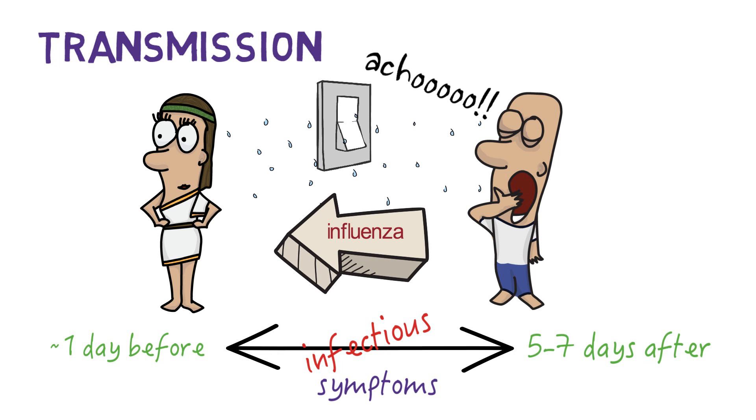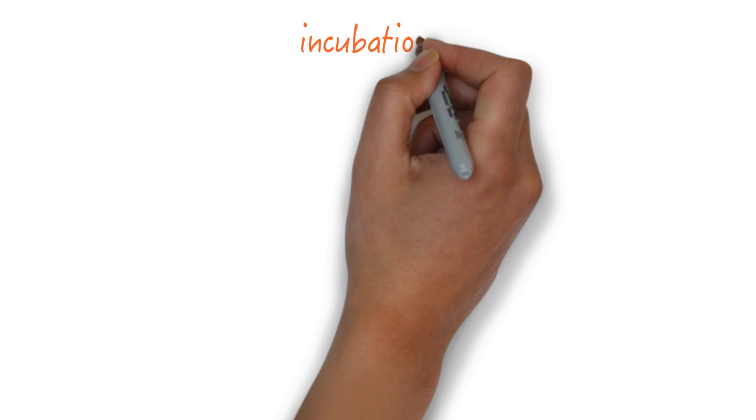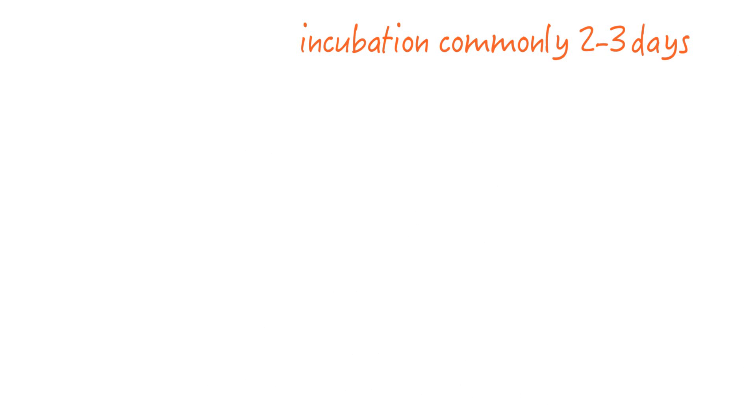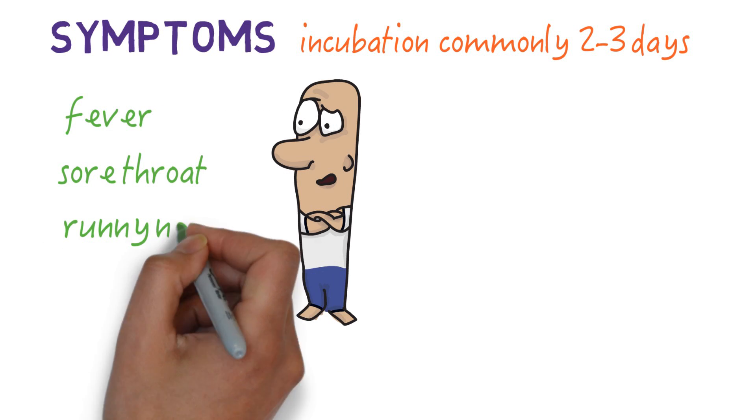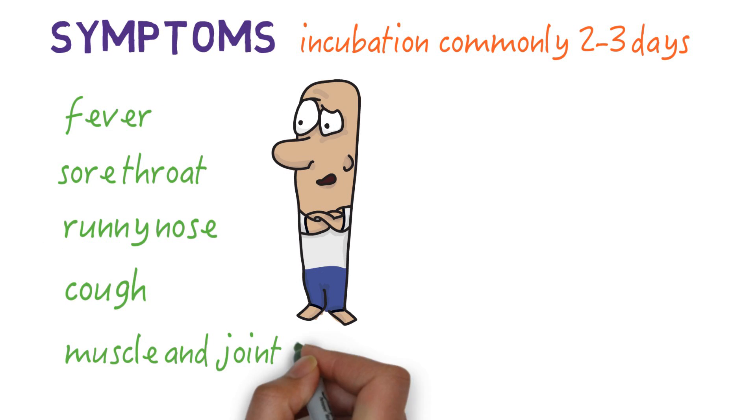Children and those who are immunocompromised are infectious for longer. Once someone gets infected with the virus, it takes about two to three days for symptoms to appear. These usually include high fever, sore throat, runny nose, cough, muscle and joint pain, headache and generally feeling unwell.